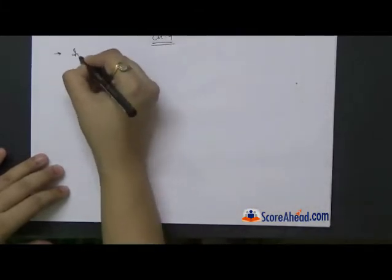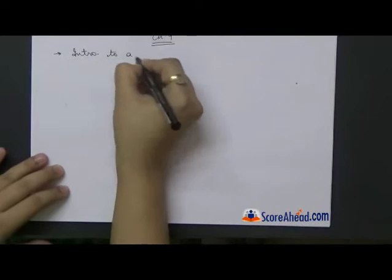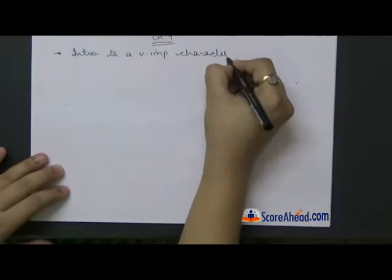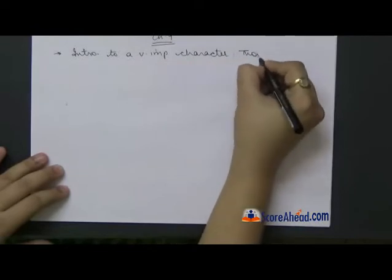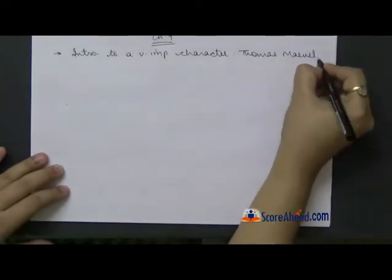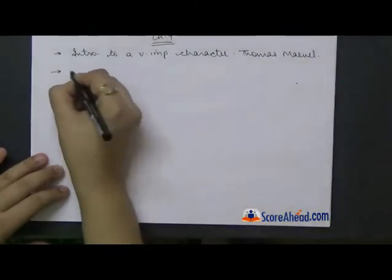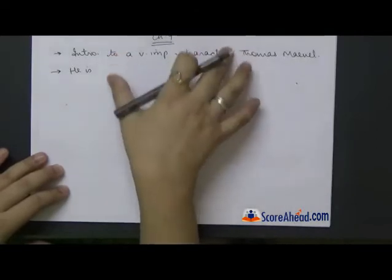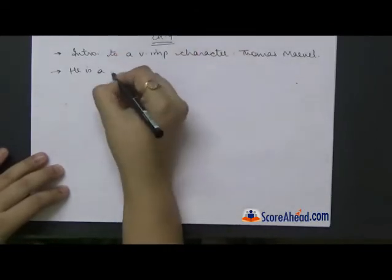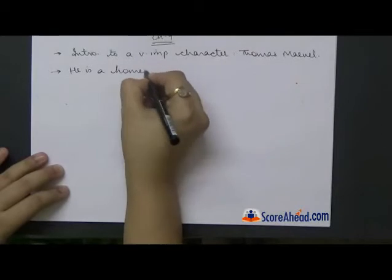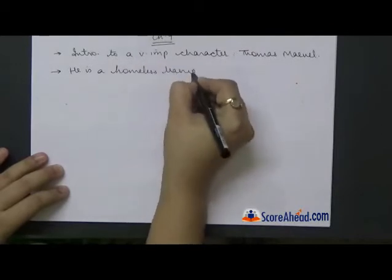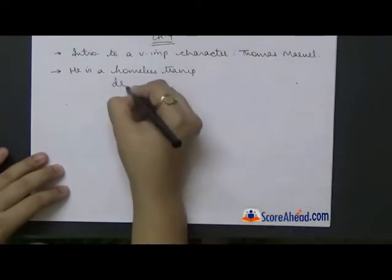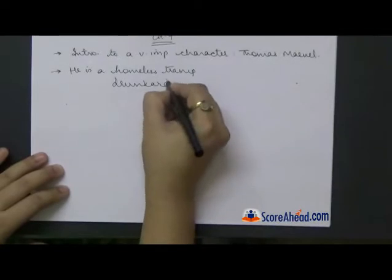In this chapter there is an introduction to a very important character whose name is Thomas Marvel. As you start reading the chapter, the very first paragraph gives us a description of him. He is a homeless tramp — somebody who does not have a permanent place to live.